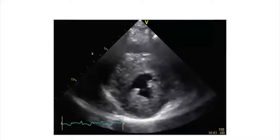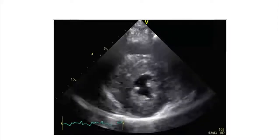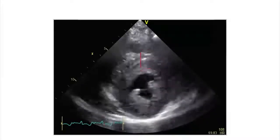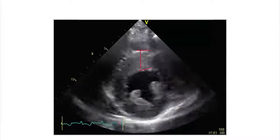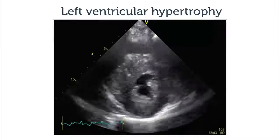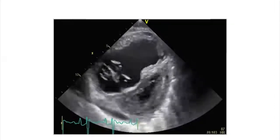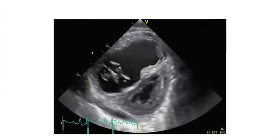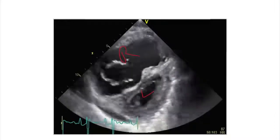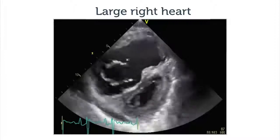Look now at this ventricle — still a relatively good function. But we have another problem here: the thickness of the myocardium, which is increased. We have a case of left ventricular hypertrophy. And to end, this is definitely not a good heart. We have a relatively small left ventricle in comparison to a huge right ventricle. This is a really clear case of pulmonary hypertension.